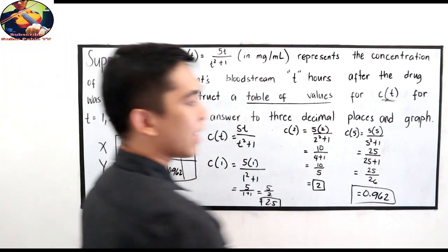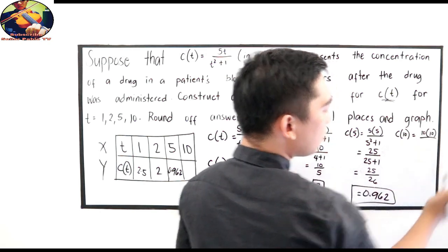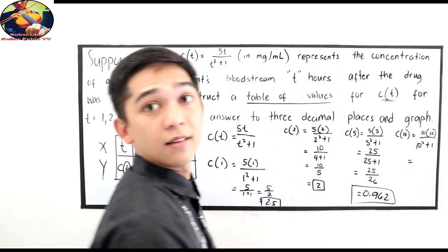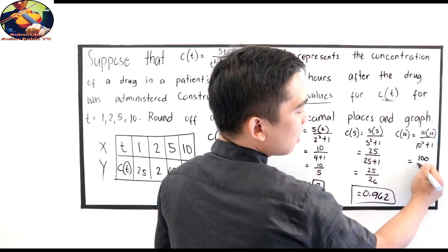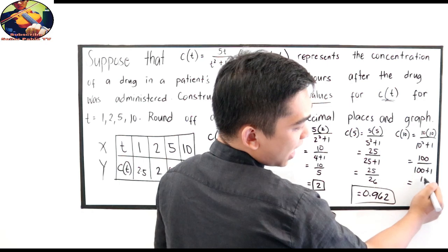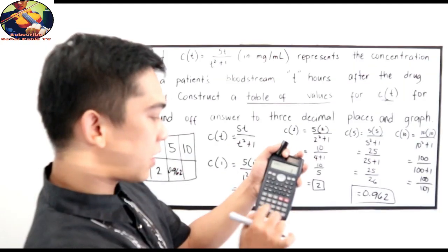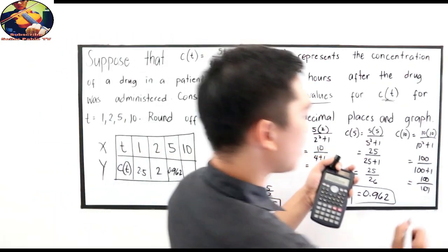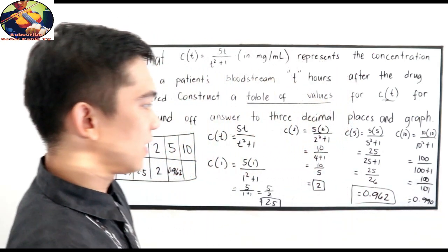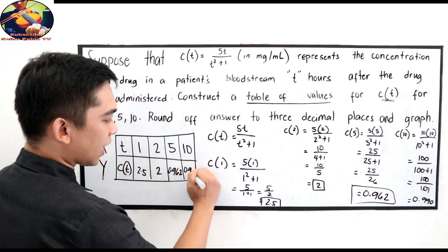Last, 10. C of 10 is equal to 10 times 10 all over t squared, 10 squared plus 1. 10 times 10, 100 all over 10 squared, 100 plus 1. This is now 100 over 101. Divide natin, 100 divided by 101, 0.990. Yan siya kung paano natin siya nalagay sa ating table of values, 0.990.